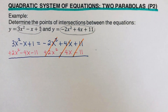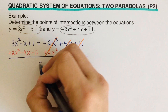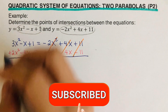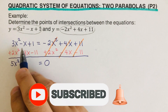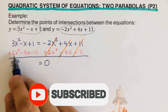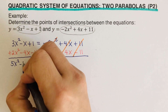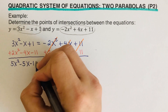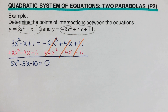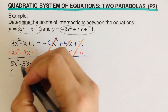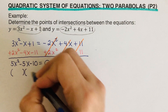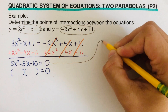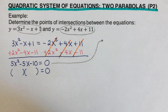The right side of the equation becomes zero. Adding the like terms on the left side: 3x squared plus 2x squared gives 5x squared. Negative x plus negative 4x gives negative 5x. And 1 plus negative 11 gives negative 10. Now we need to determine the factors of this trinomial using the box and diamond method.